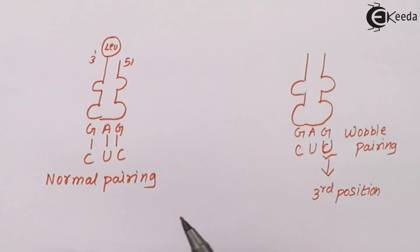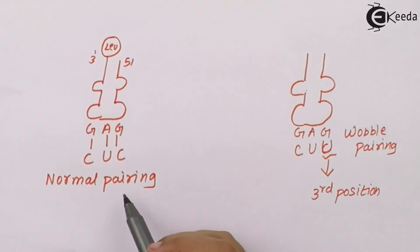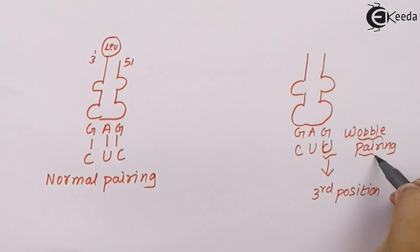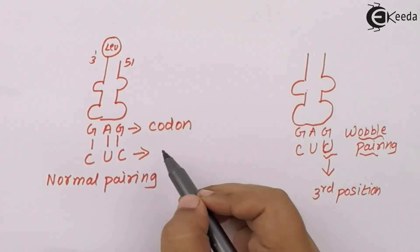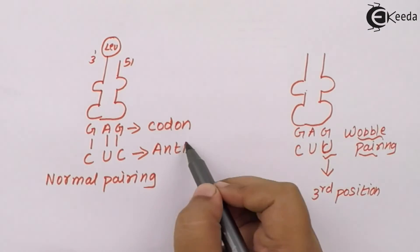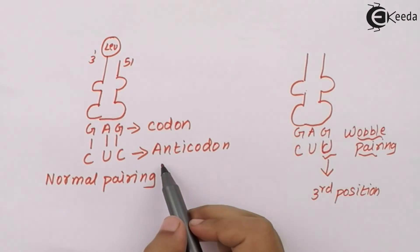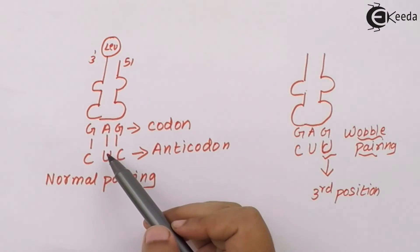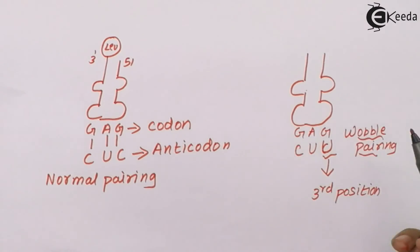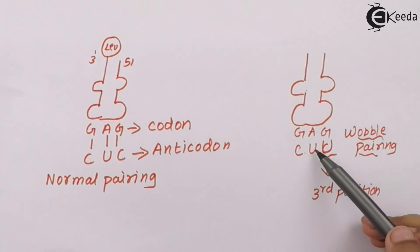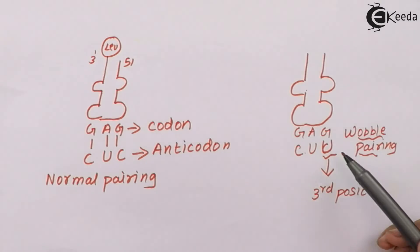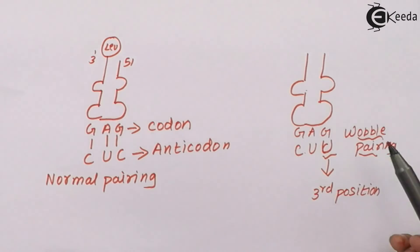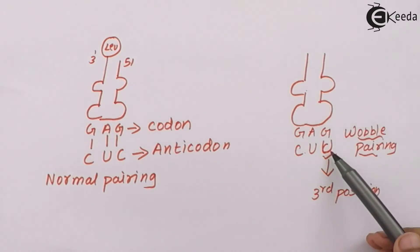In this diagram, normal pairing and wobble pairing are shown. These are codons and these are anticodons. In normal pairing, a perfect protein would be formed. In the wobble pairing case, the first two positions are properly paired, but guanine is paired with uracil — which doesn't normally happen, as guanine pairs with cytosine. This is an example of wobble pairing, where the third position nucleotide or base is different.